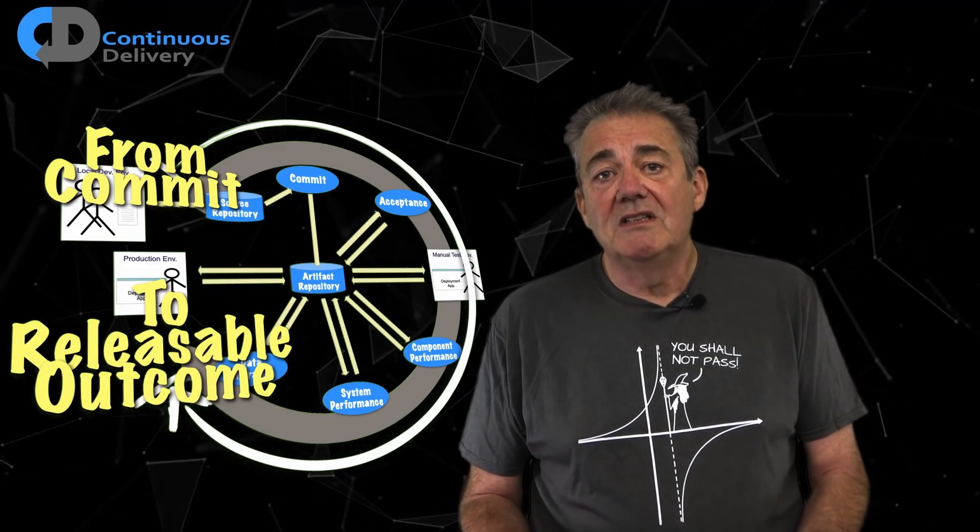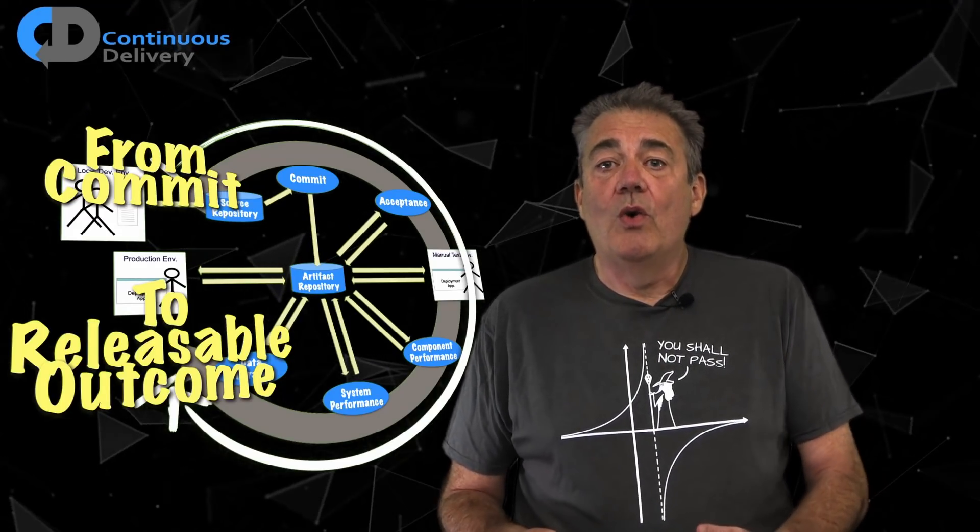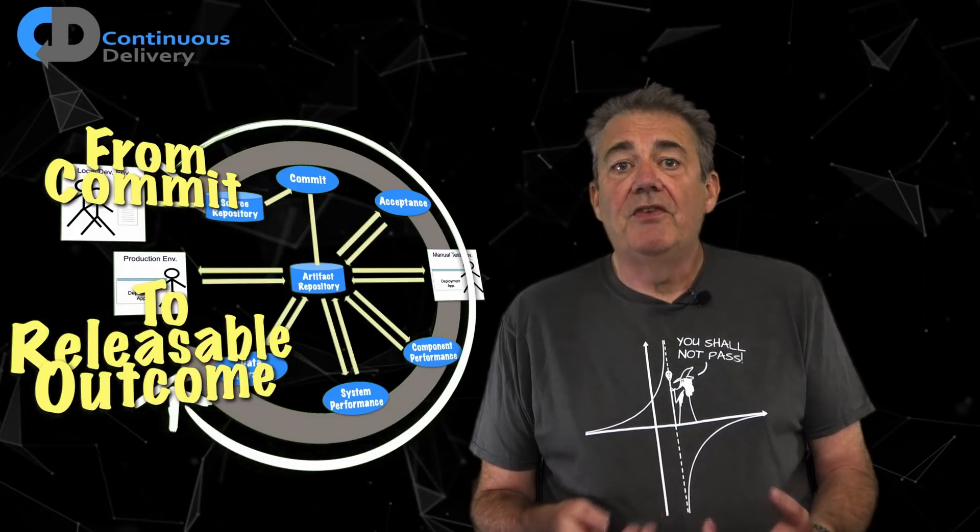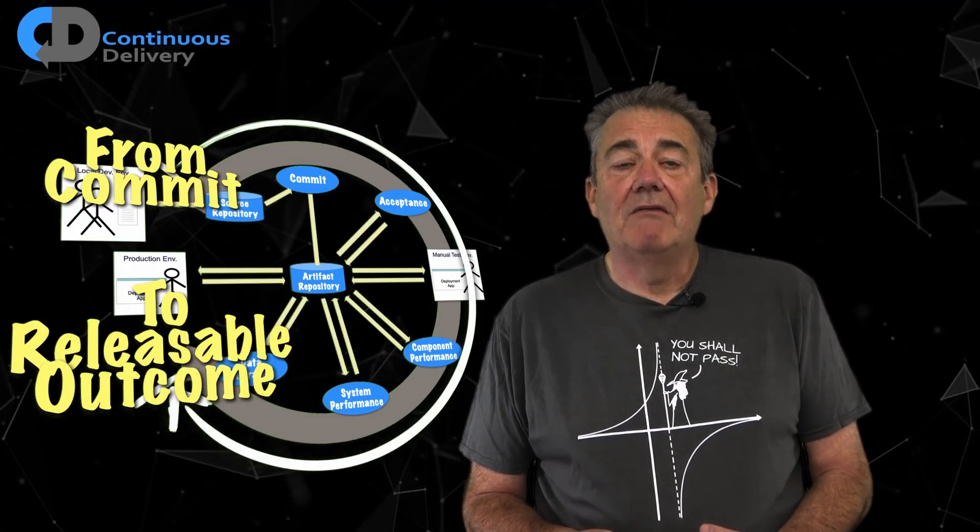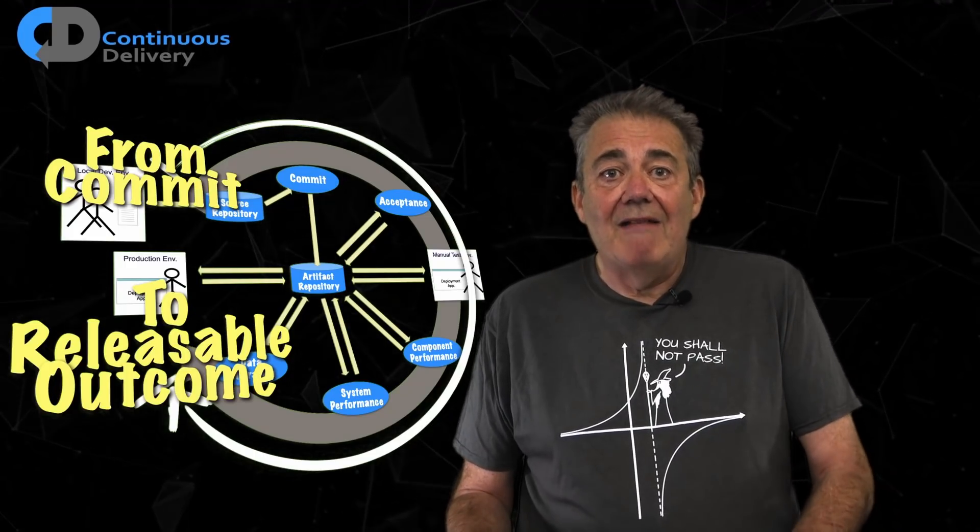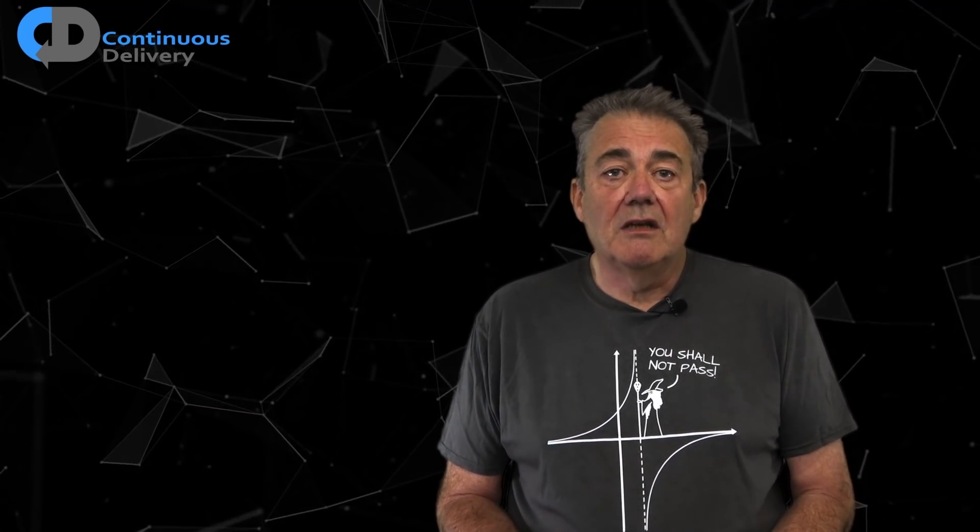My preferred description of continuous delivery is working so that our software is always in a releasable state. Our deployment pipeline provides a definitive statement on that releasability. So within it, we're going to test everything that we can think of that defines releasable. But even that doesn't cover all that we'd like to know.